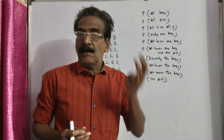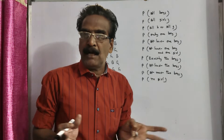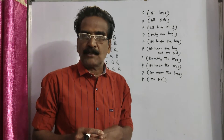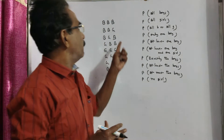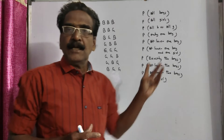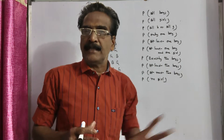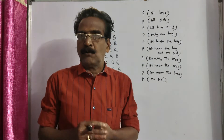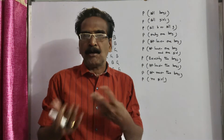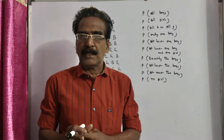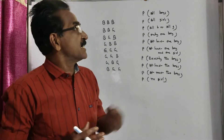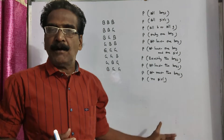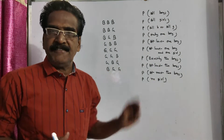For all these, probabilities are favorable outcomes by total number of outcomes. Total number of outcomes is of course eight. We are going to calculate the favorable outcomes — favorable outcomes by total number of outcomes — which will give us the probabilities of all these events.